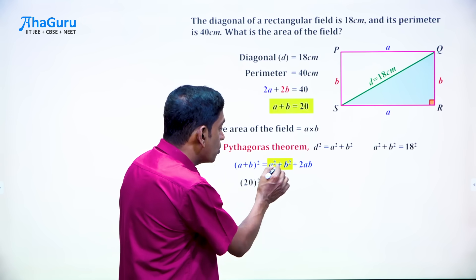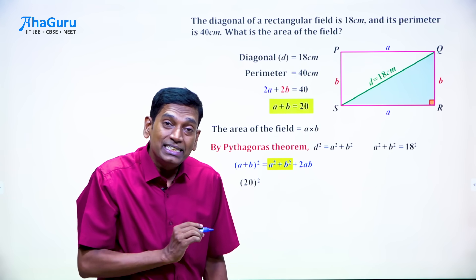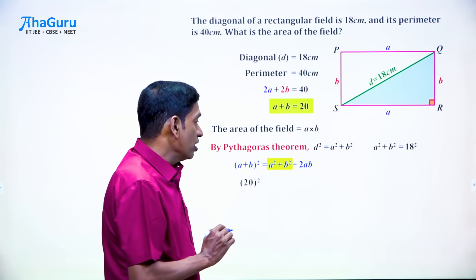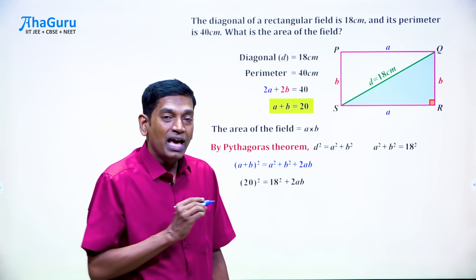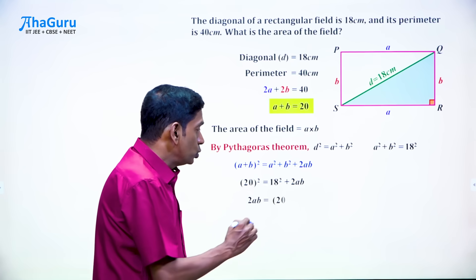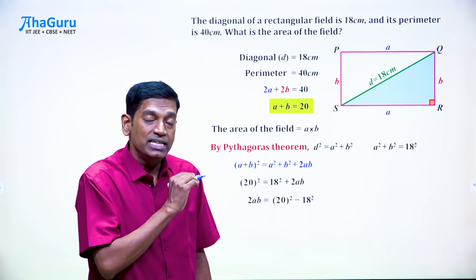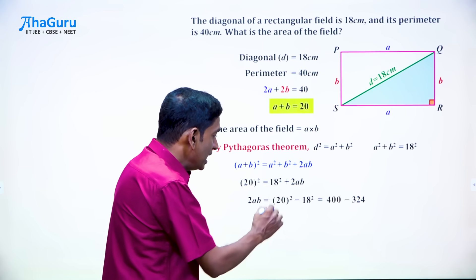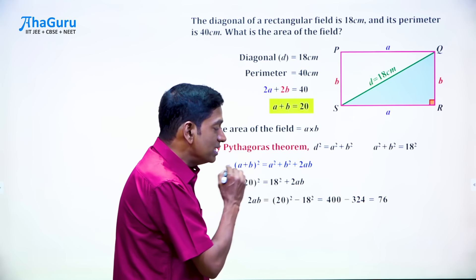What about the right hand side? If you look at A square plus B square, we already found it as 18 square. Therefore, we can say this is 18 square and the 2AB will just come as it is. Now we can rewrite this as 2AB equals 20 square minus 18 square. This means it is 400 minus 324 which is 76.